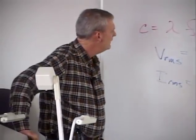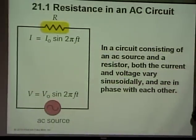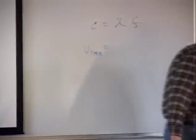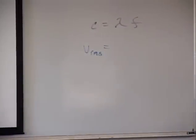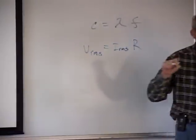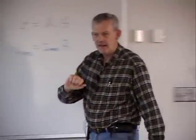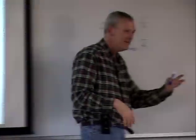Also know that Vrms equals Irms times R — Ohm's law for AC. Capacitors and inductors act like resistors in a circuit; they also impede current, which is why it's called impedance.